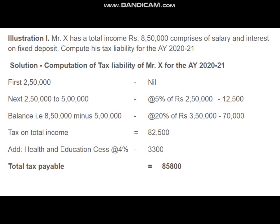Income tax is a progressive tax, meaning the rate of tax increases with the increase in income. For income tax there is a slab rate. As per that slab, the first 2 lakh 50,000 tax rate is nil — it is exempted. If your income is up to rupees 2 lakh 50,000 in a year, you pay no tax. The next slab from 2 lakh 50,000 to 5 lakh — that additional 2 lakh 50,000 — is taxable at the rate of 5 percent.